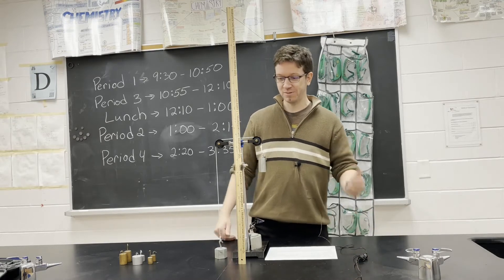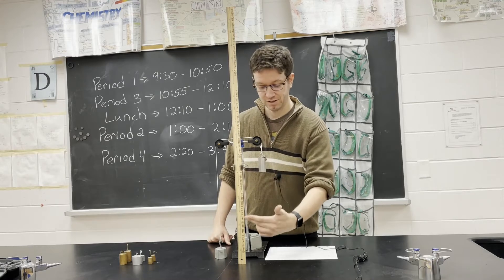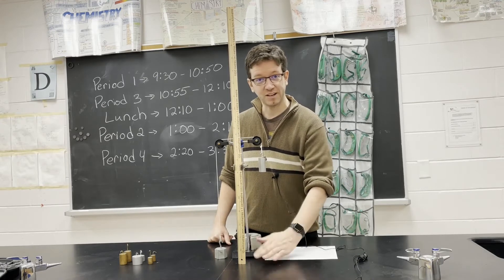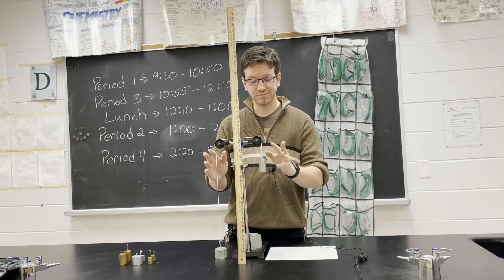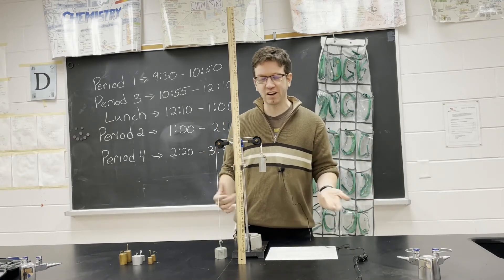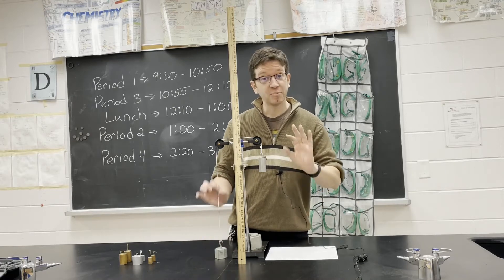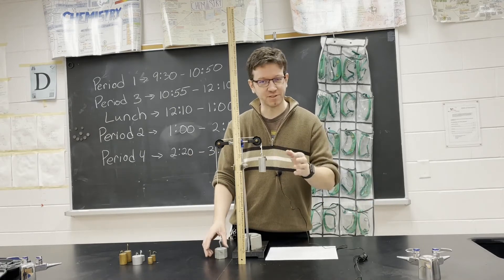Alright, so let's go over the setup. We have our ruler here, where zero is at the bottom of this table. And then we have a pulley. It's not perfectly frictionless, but for this experiment, we are assuming that it is frictionless. But that is going to be an error in some of our measurements.